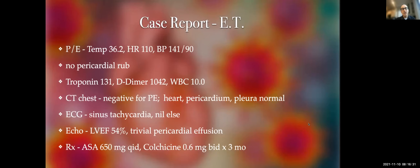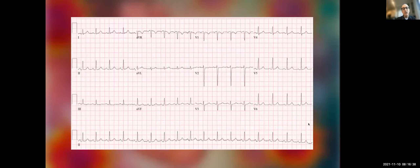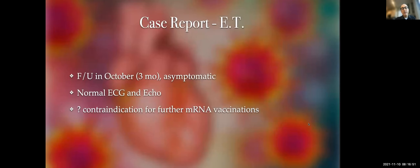Given that her signs and symptoms resembled acute pericarditis, we managed her accordingly with high-dose aspirin 650 mg QID for one month and colchicine 0.6 mg BID for three months. Her ECG showed sinus tachycardia but none of the characteristic ST changes of pericarditis. At follow-up in September and October, she was asymptomatic, her ECG had normalized, and her echo showed normal LV function. We discussed whether a third shot mandate would be contraindicated for her.